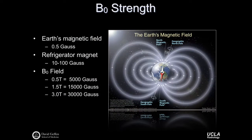Regarding B0 field strength, the Earth's magnetic field is about half a Gauss, and a common refrigerator magnet is about 10 to 100 Gauss. The B0 fields used in MR imaging are on the order of 5,000 to 30,000 Gauss—considerably stronger than the conventional magnets we encounter in everyday life. This gives rise to important safety considerations because these very strong magnetic fields can pull ferromagnetic devices or objects into their field very quickly and with great force.